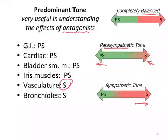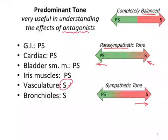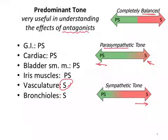Looking at the list, through practice with clinical scenarios you'll internalize these. The GI tract is parasympathetically dominant — does that make sense? Cardiac function is also controlled by the parasympathetic nervous system; think of the vegetative functions. Bladder smooth muscle is parasympathetic. Iris sphincter muscles are parasympathetic, while the radial muscles are sympathetic — completely separate structures, as we discussed. The vasculature itself is sympathetically dominant, and the bronchioles of the respiratory tree are also sympathetically dominant. These are the major organ systems we'll be discussing as we move forward in these units.